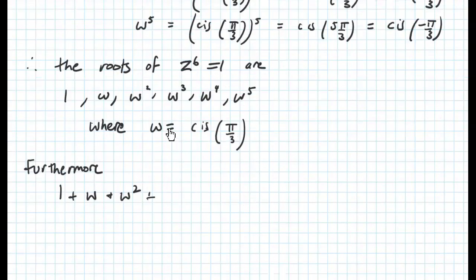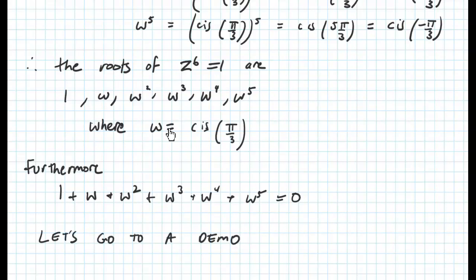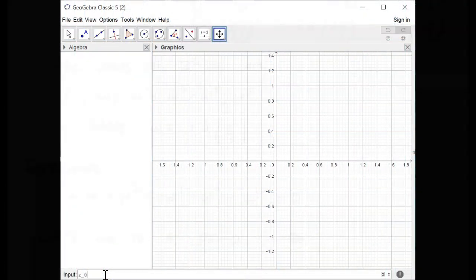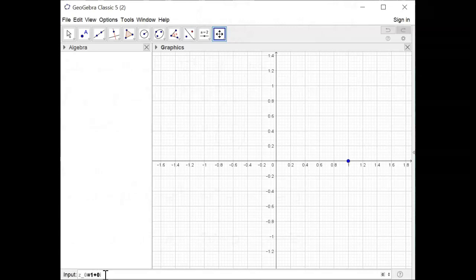We'll also look at the property that 1 plus w plus w squared, etc., up to w to the power of 5 equals 0. We'll now use GeoGebra to demonstrate how this looks geometrically.